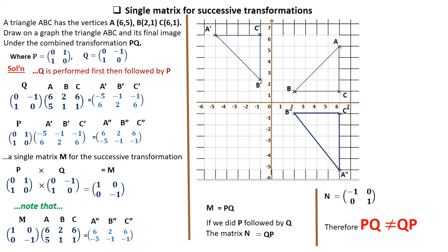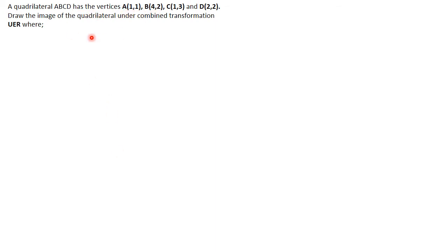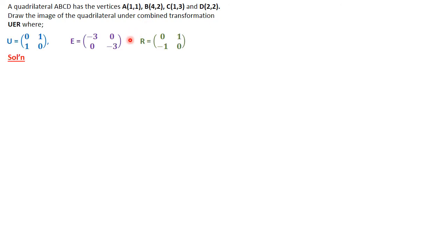Now let's move on to the next example, which emphasizes the same concepts in a different way. We are given a quadrilateral ABCD with vertices given. We are told to draw the image of the quadrilateral under combined transformations U, E, R, where U, E, and R are the matrices given.